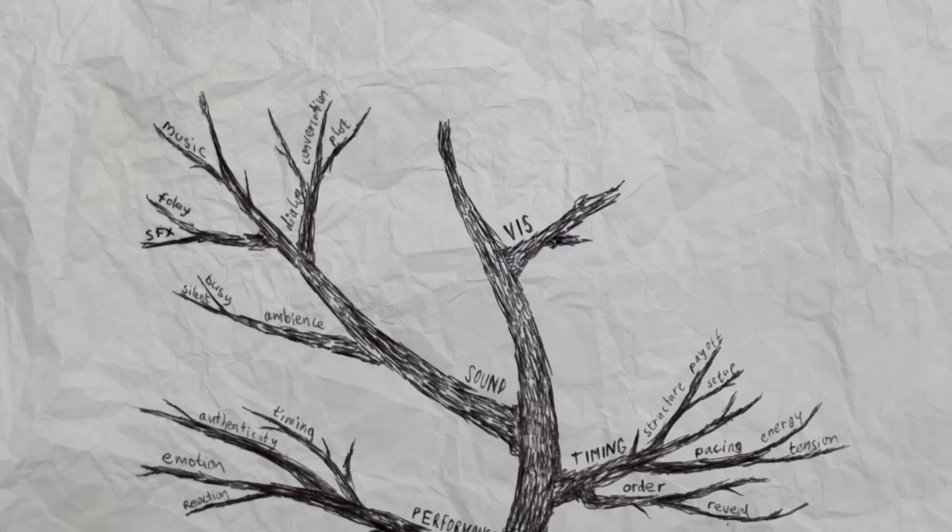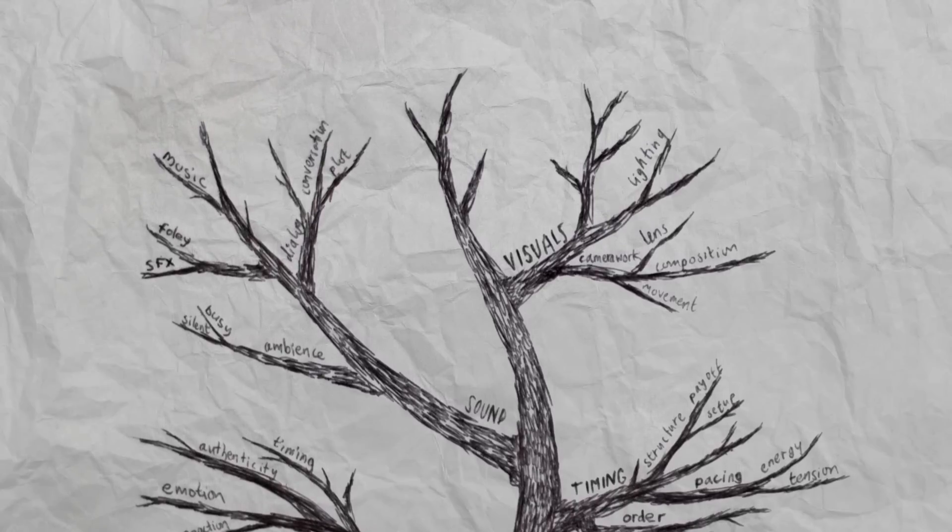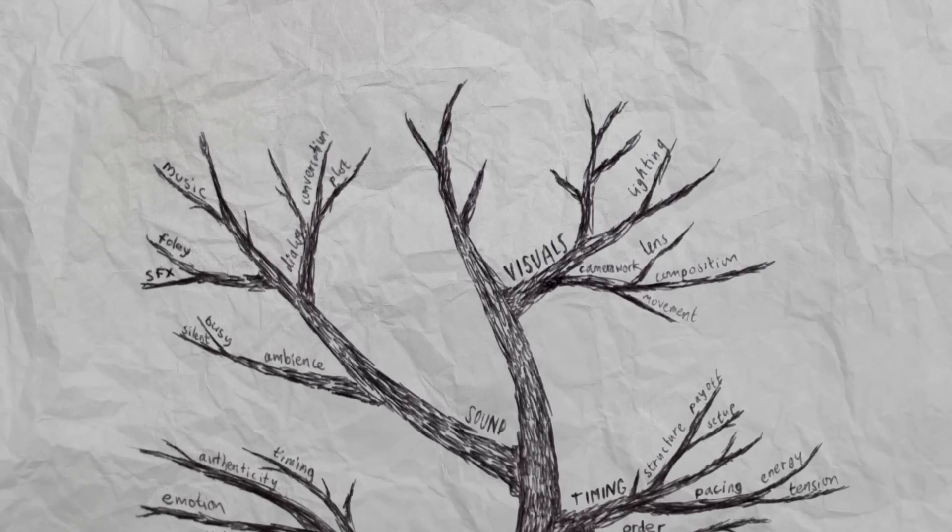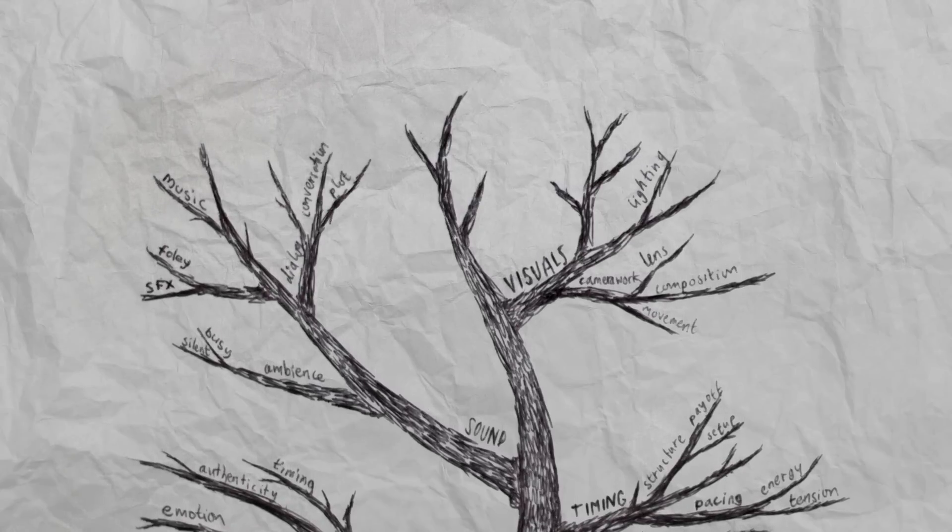And then there's the visuals, how we move the camera, how we choose to position it, and the lenses we use. Lighting is also part of the aesthetics, from dark contrasty looks to beautiful soft images, and everything in between.